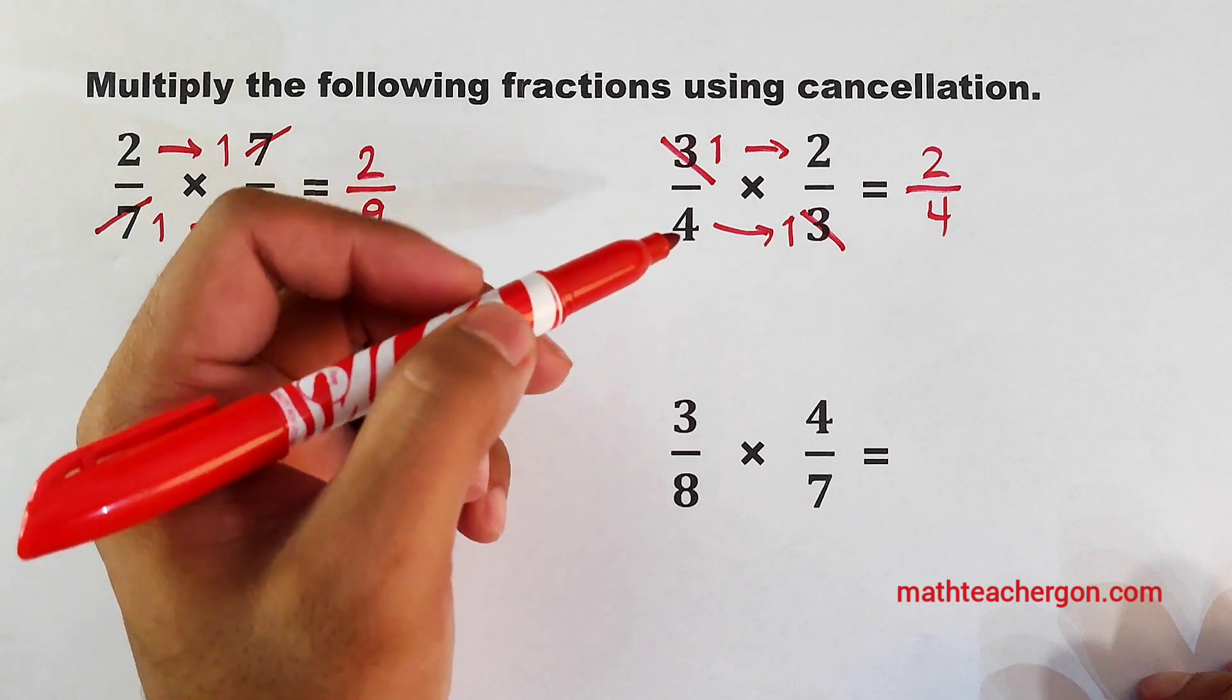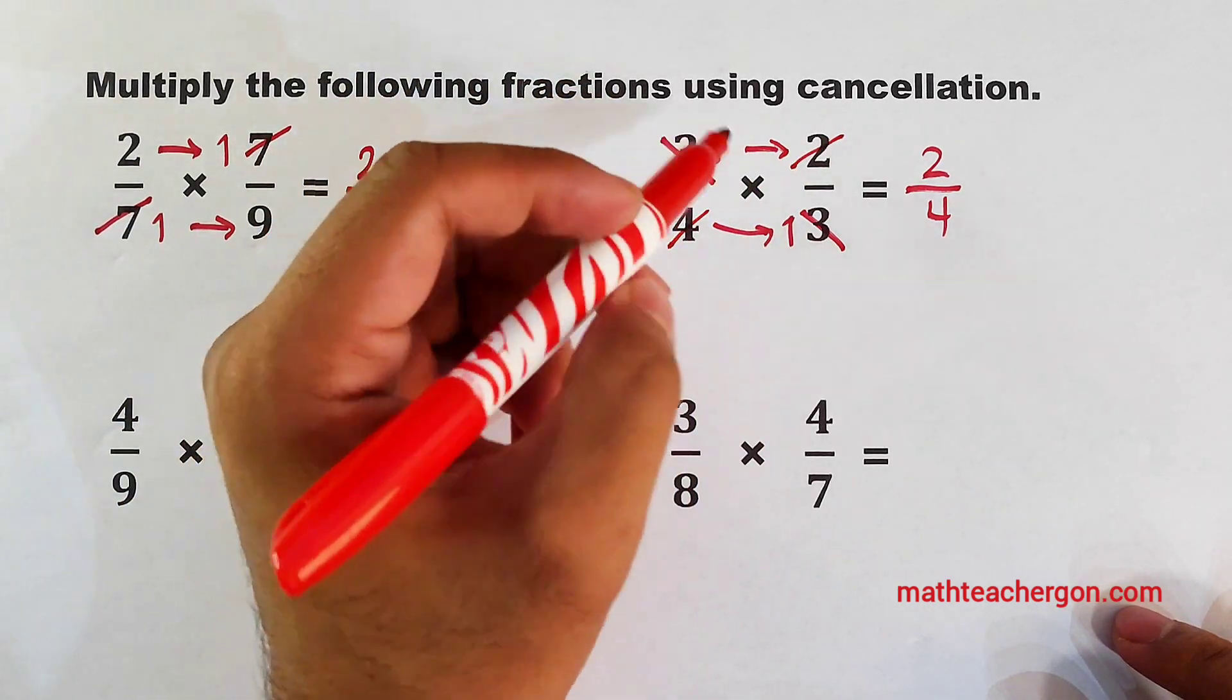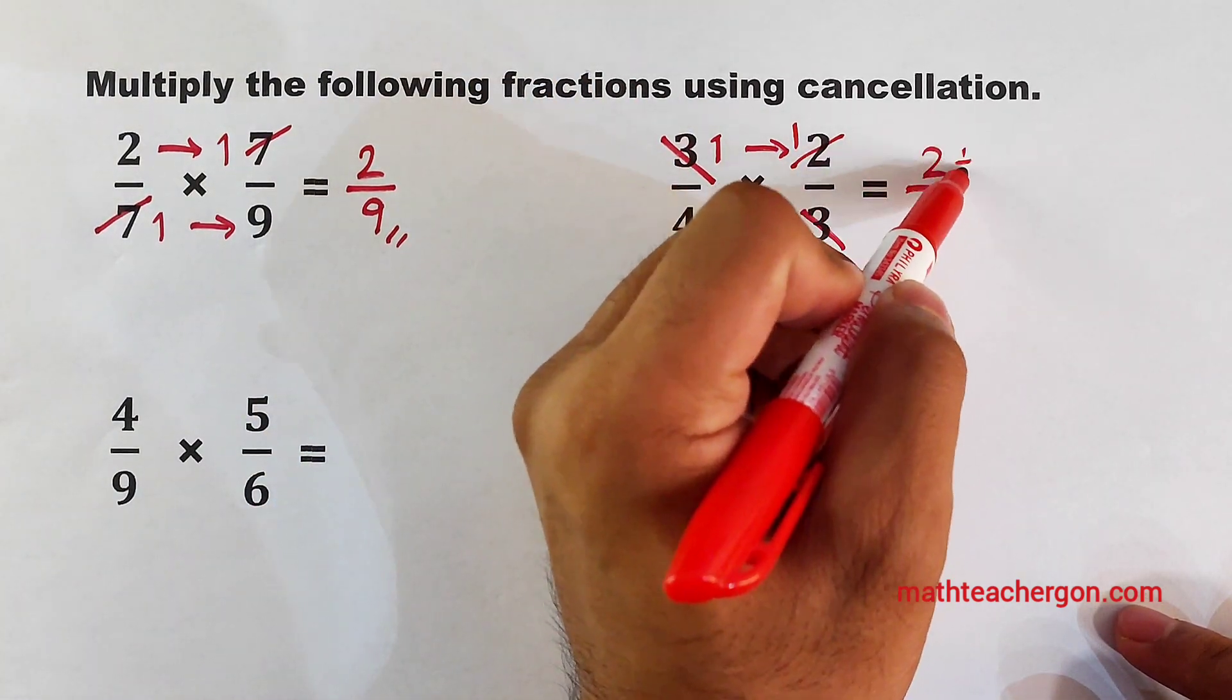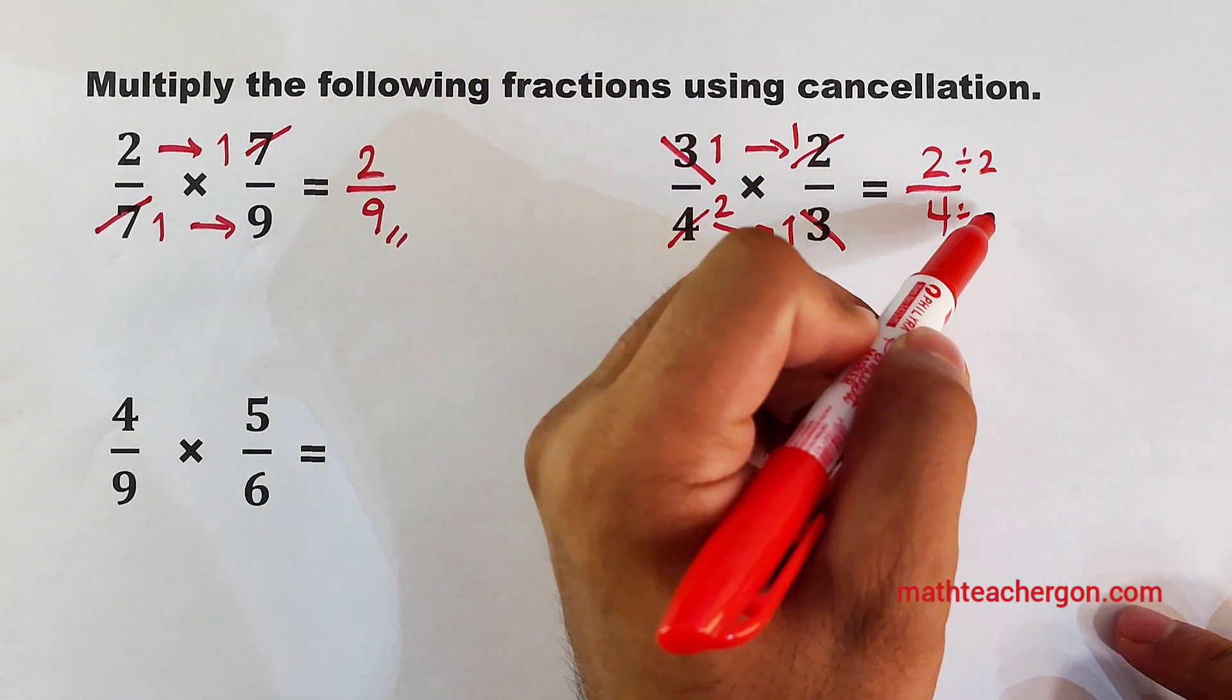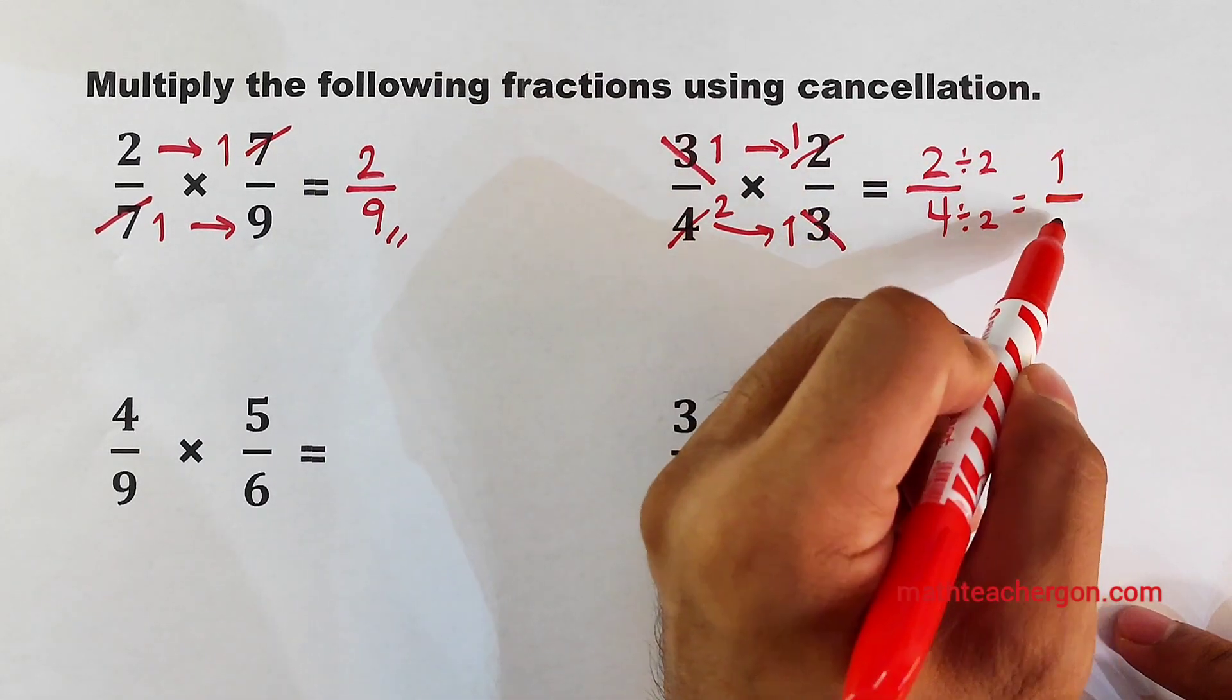And by the way, I forgot about it. We can also cancel this out. It will become 2 and 1 because we can divide this by 2, divide this by 2. And as you can see, it will become 1 over 2. And this is our answer.